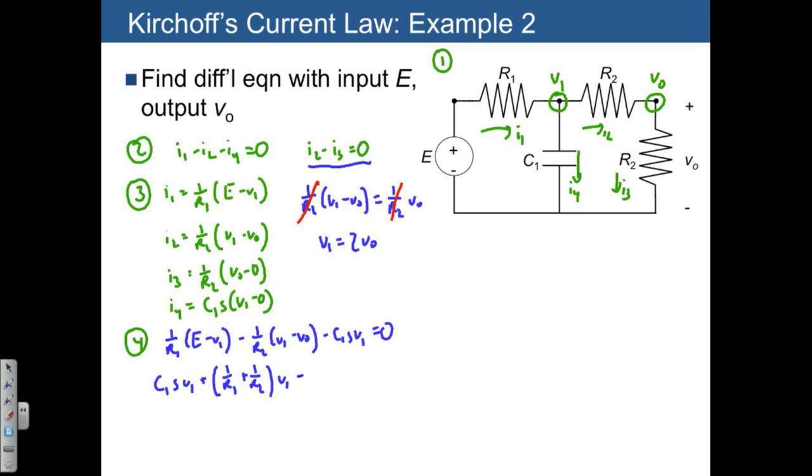I also have 1 over R2 times VO, and moving to the right, 1 over R1 times E.